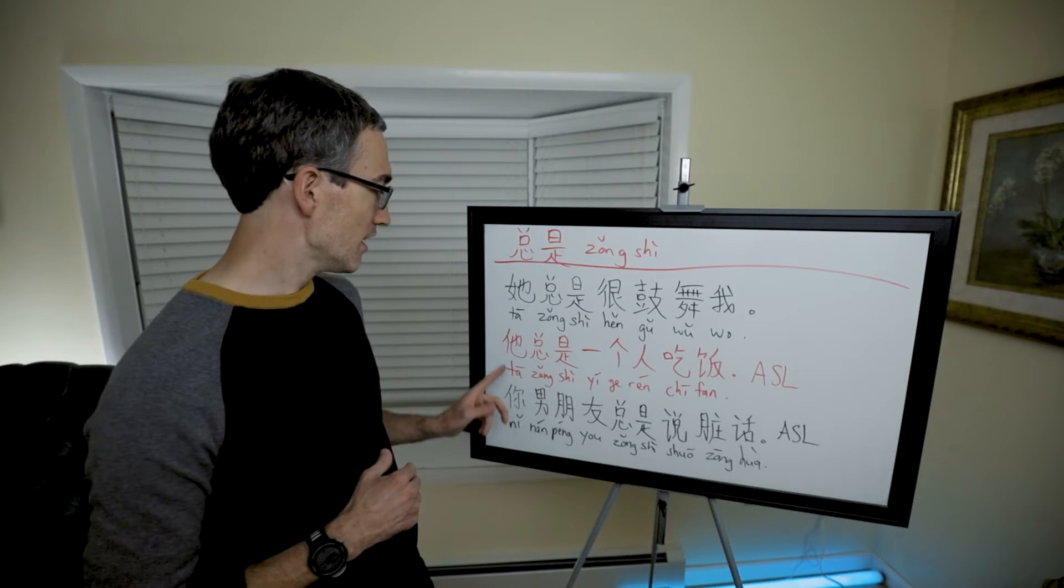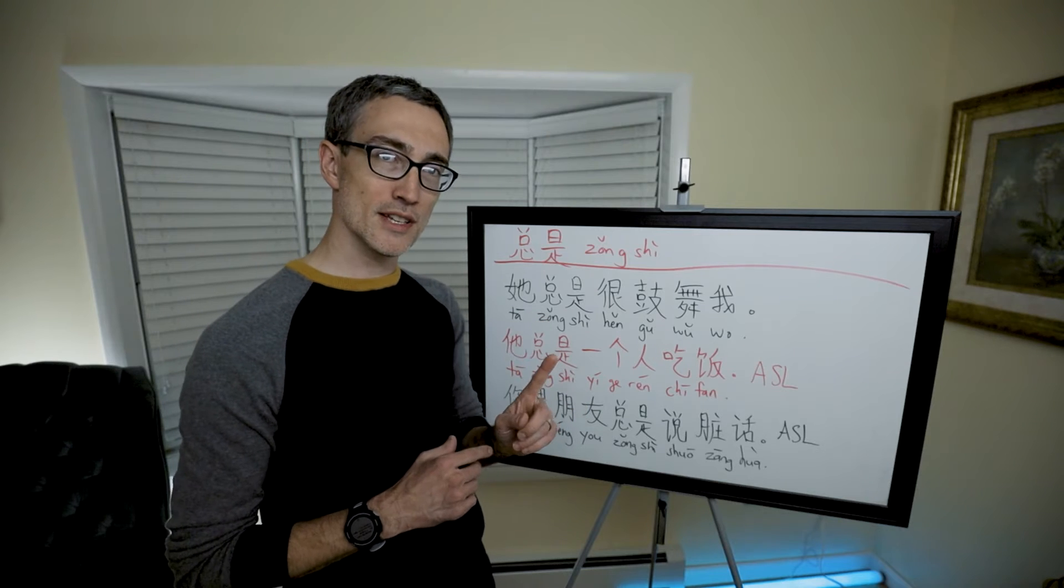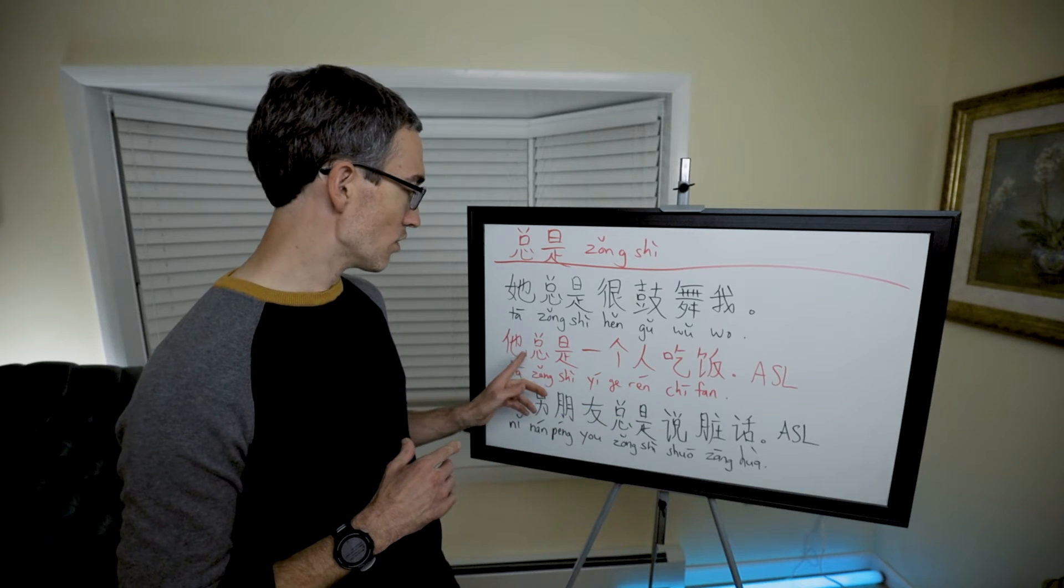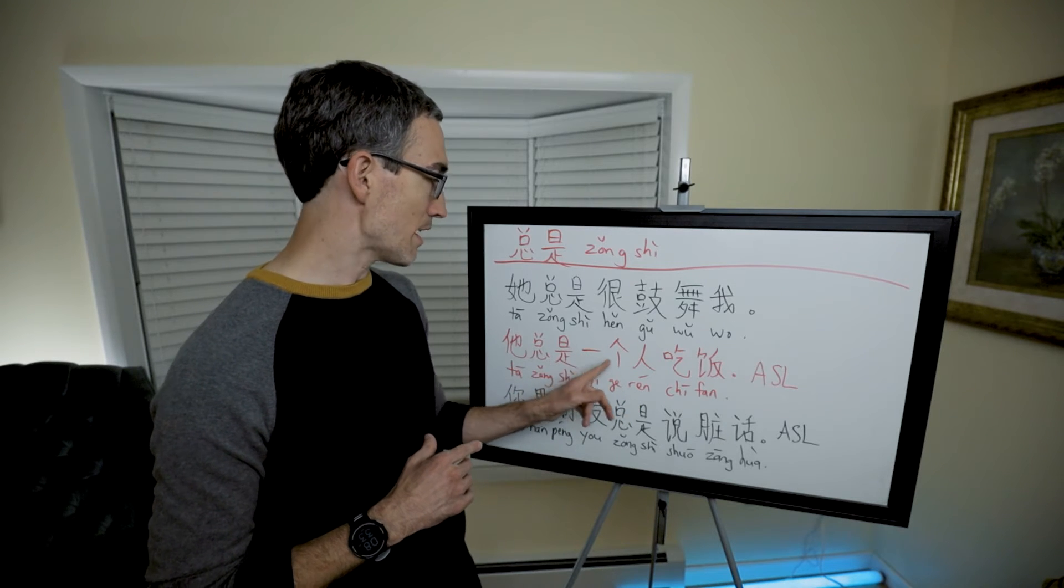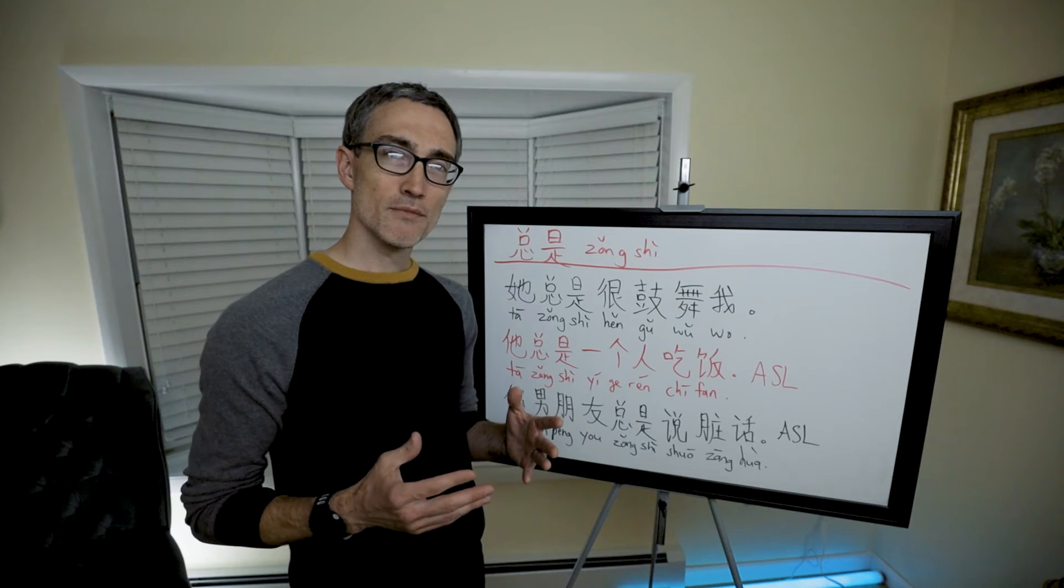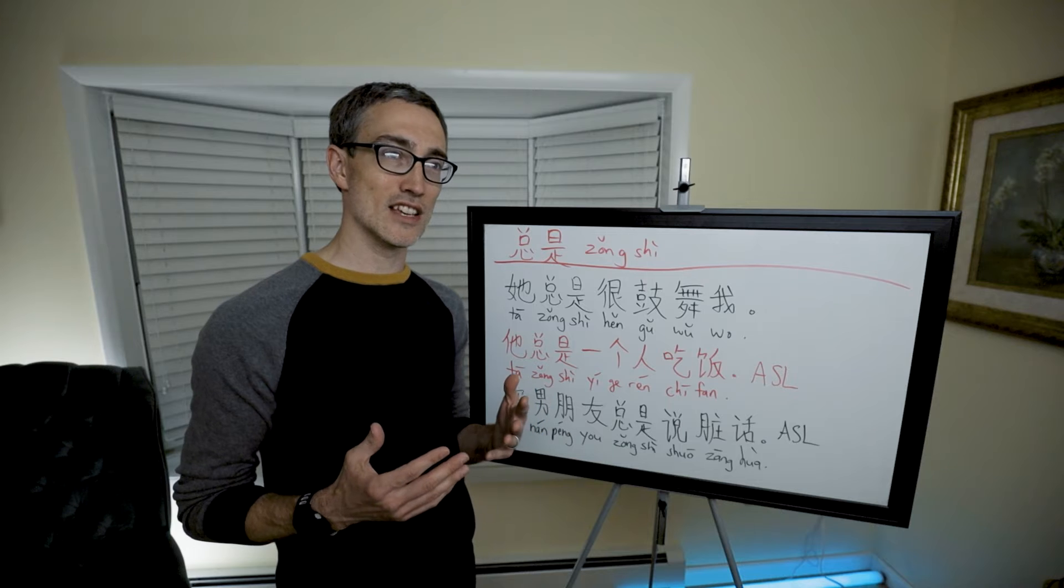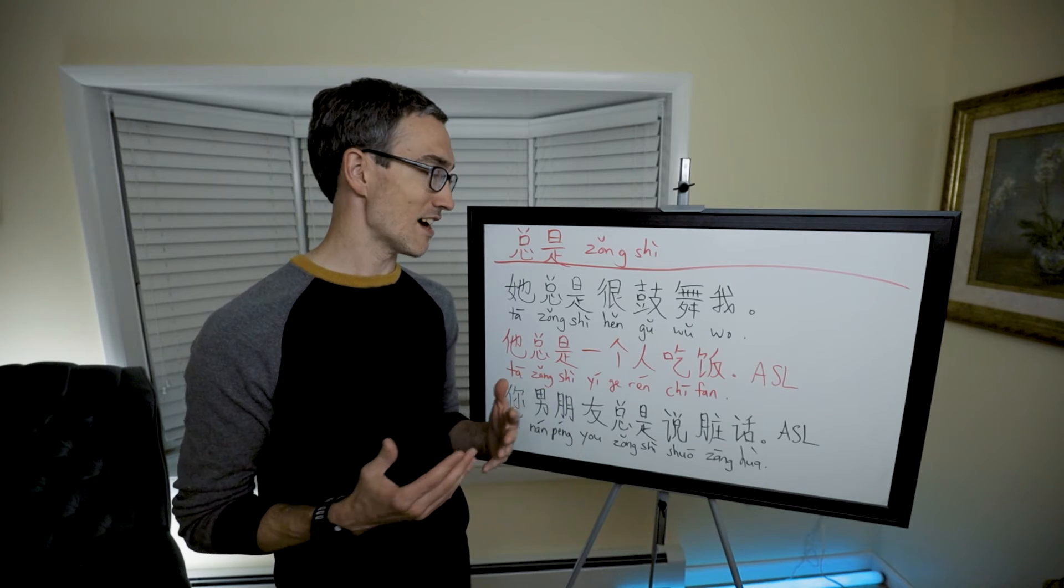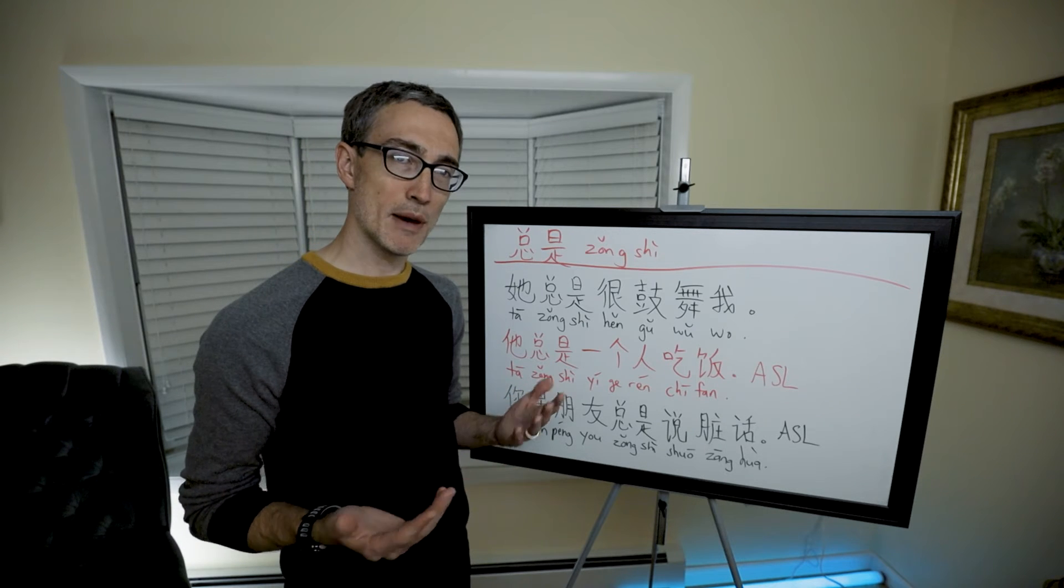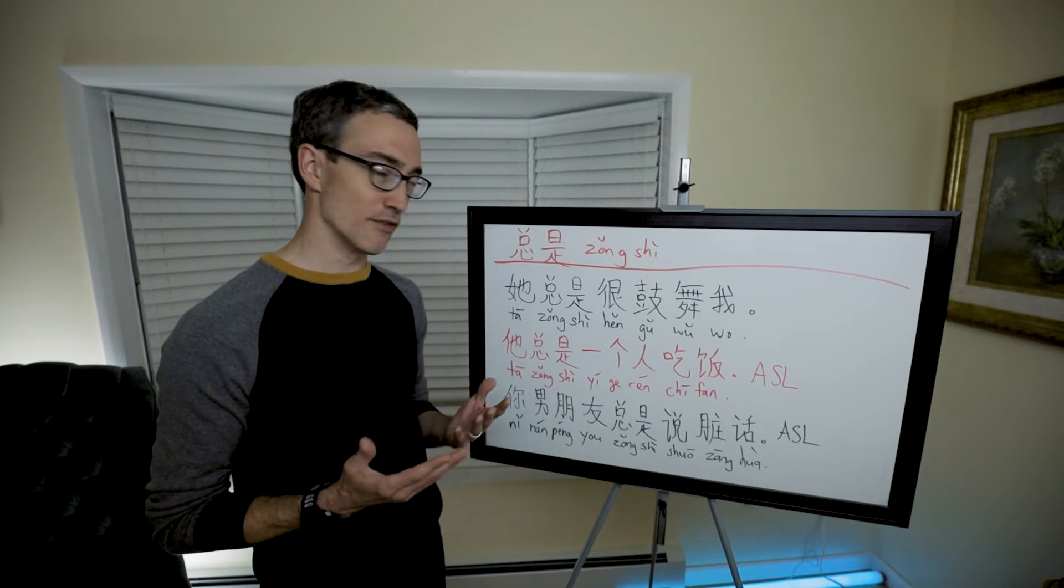她总是一个人吃饭. This is from All Set Learning. He, always, 总是一个人. It means one person, but here it means by himself, or alone. He always by himself eats. He always eats by himself. He always eats alone. So this, while it's a little bit sad maybe, it's more of a neutral statement of a fact. It's not saying positive or negative. It's just saying he always eats alone. That might be sad, but it's not like a criticism of the person.